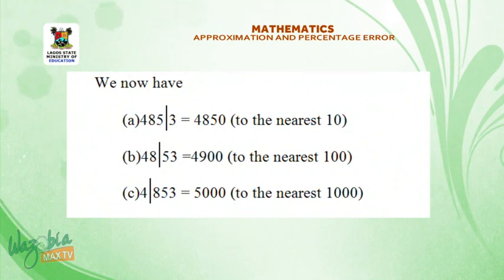We now have A, 4853 is equal to 4850 to the nearest ten. B, 4853 is equal to 4900 to the nearest hundred.